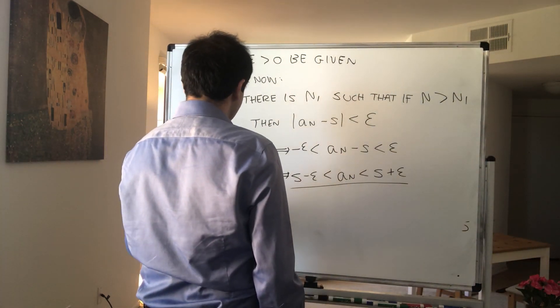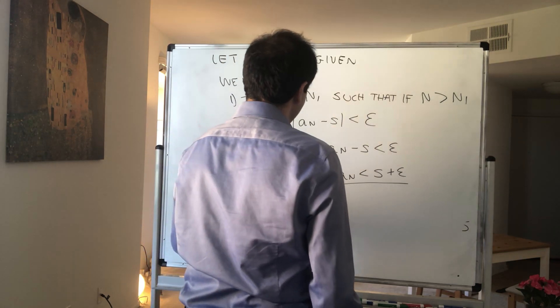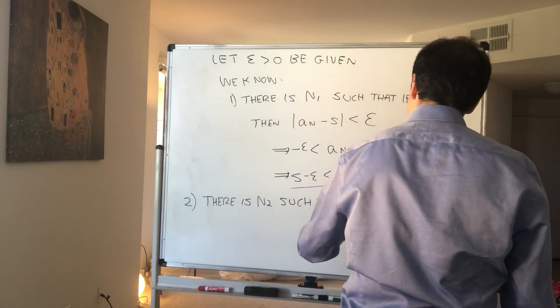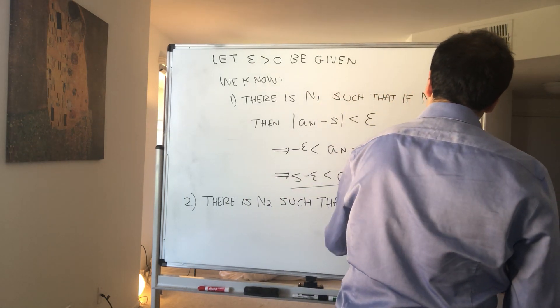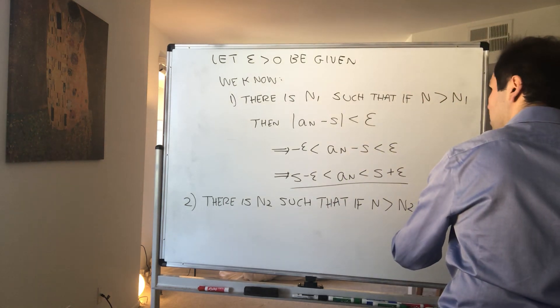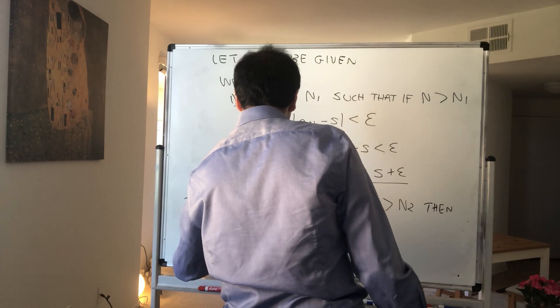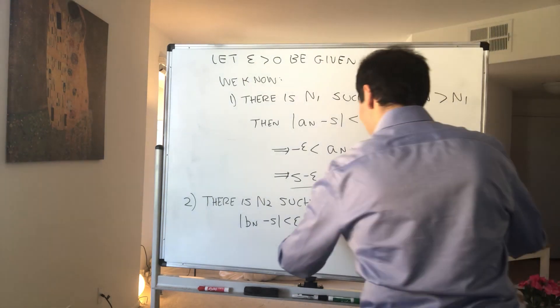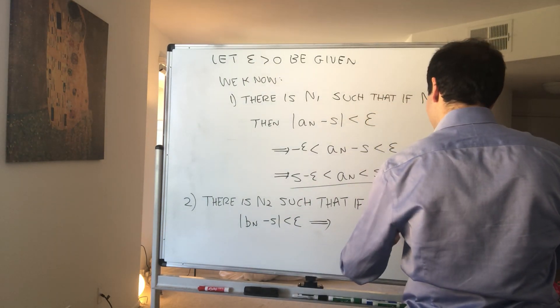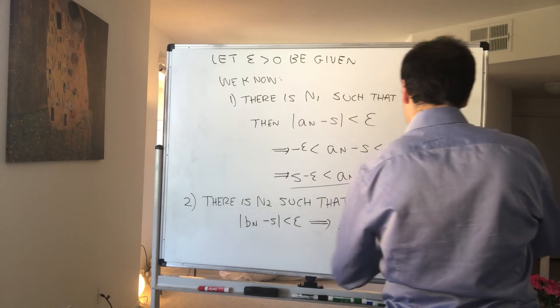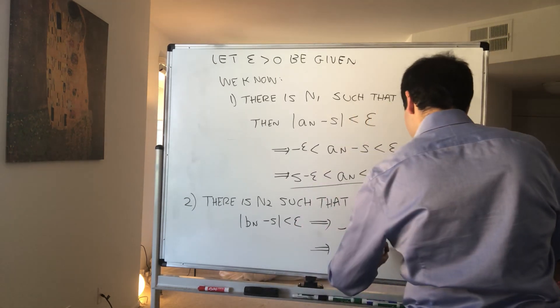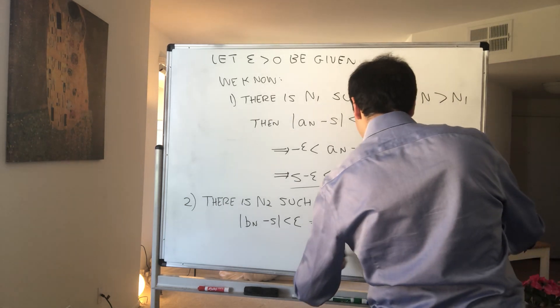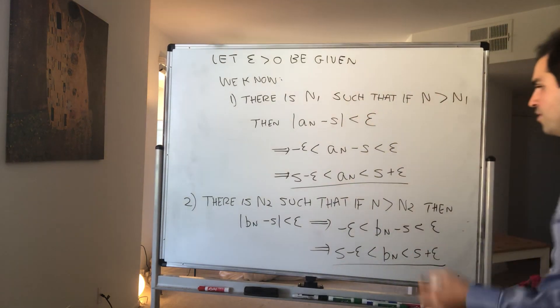But also, we know that there is N2 such that if n is bigger than N2, then b_n minus s is less than epsilon. So that is by convergence of b_n, and what this means is b_n minus s is between -epsilon and epsilon. So b_n is between s + epsilon and s - epsilon. Very good.